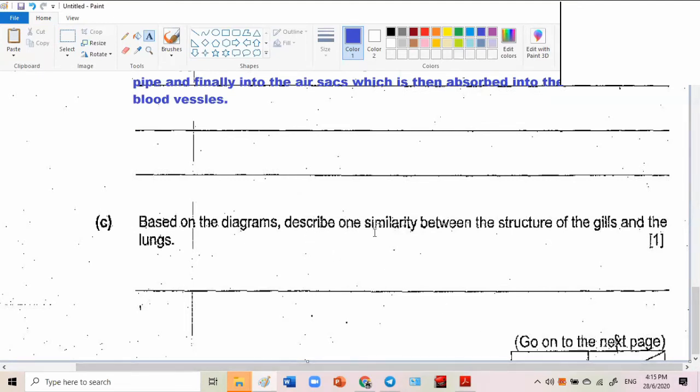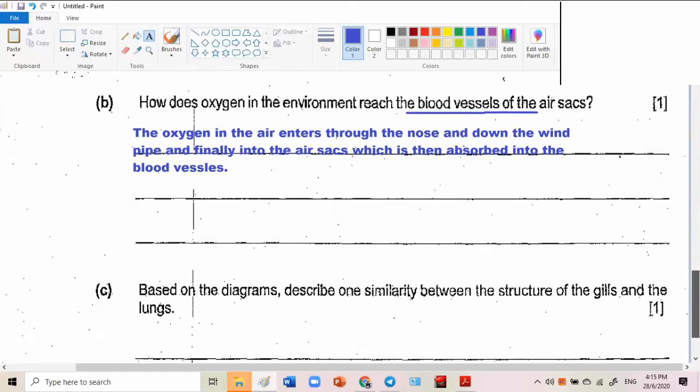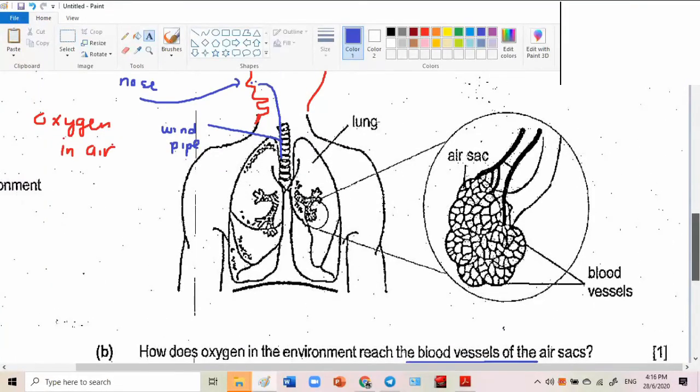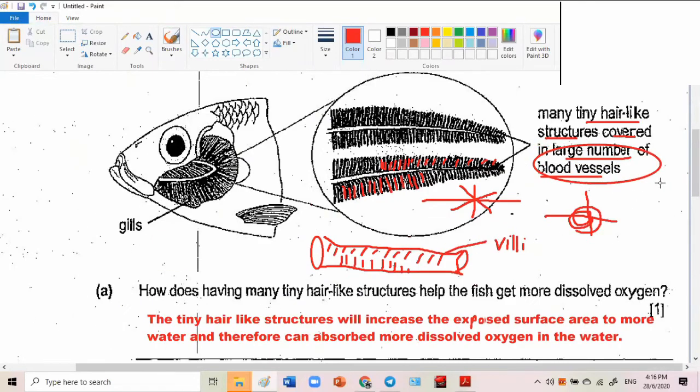Based on the diagram describe one similarity between the structure of the gills and the lungs. Based on the diagram, you have a printed paper here. You tell me. Blood vessels. See your blood vessels here? Similarity. The air sacs is covered with blood vessels. See here? See the keyword here? Blood vessels. Many blood vessels. This one, see? Large number of blood vessels. That's the similarity. It's in the diagram. They didn't cheat you. Based on the diagram. Can you see now? This guy. Large number. Covered by large number of blood vessels.